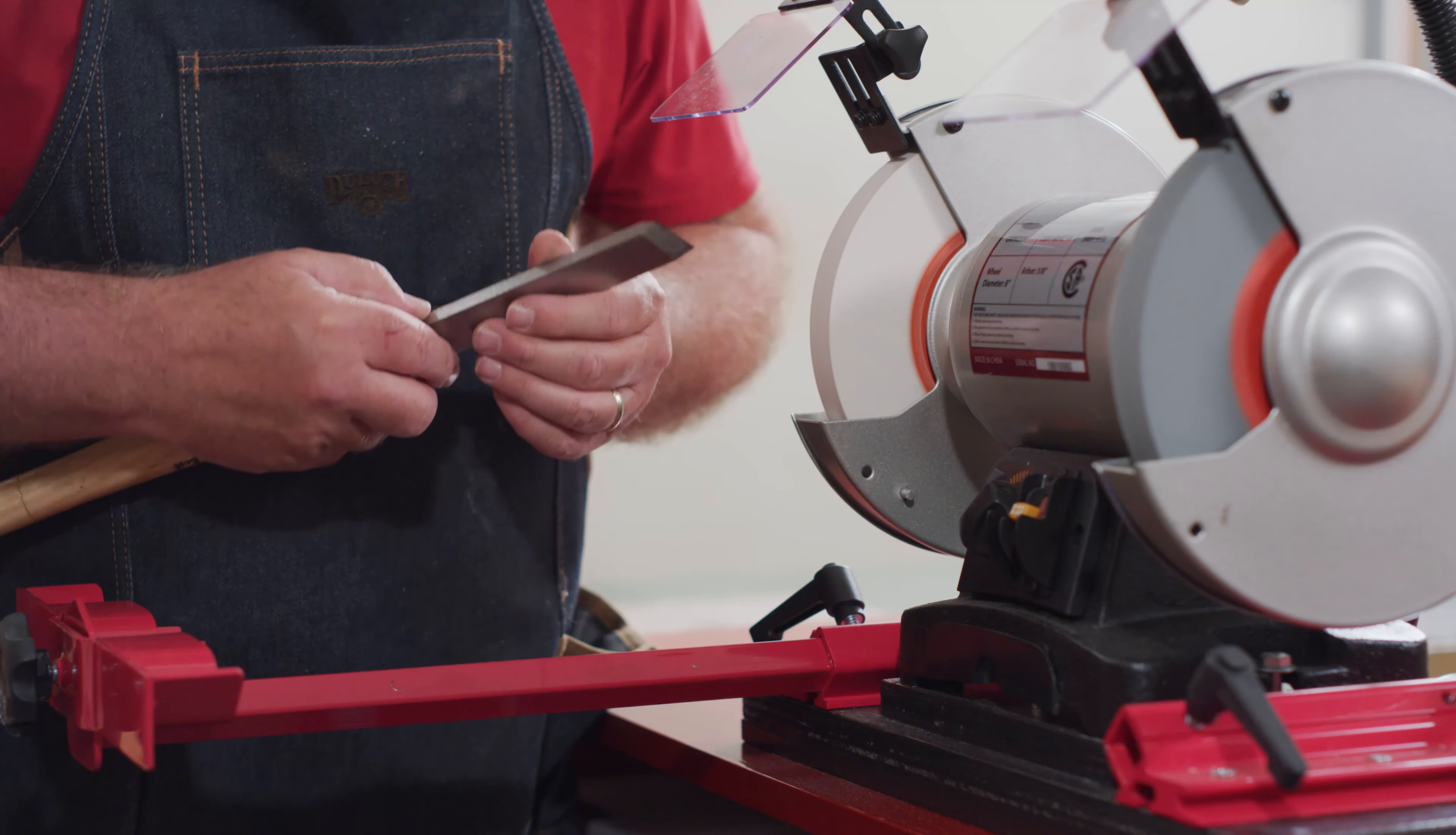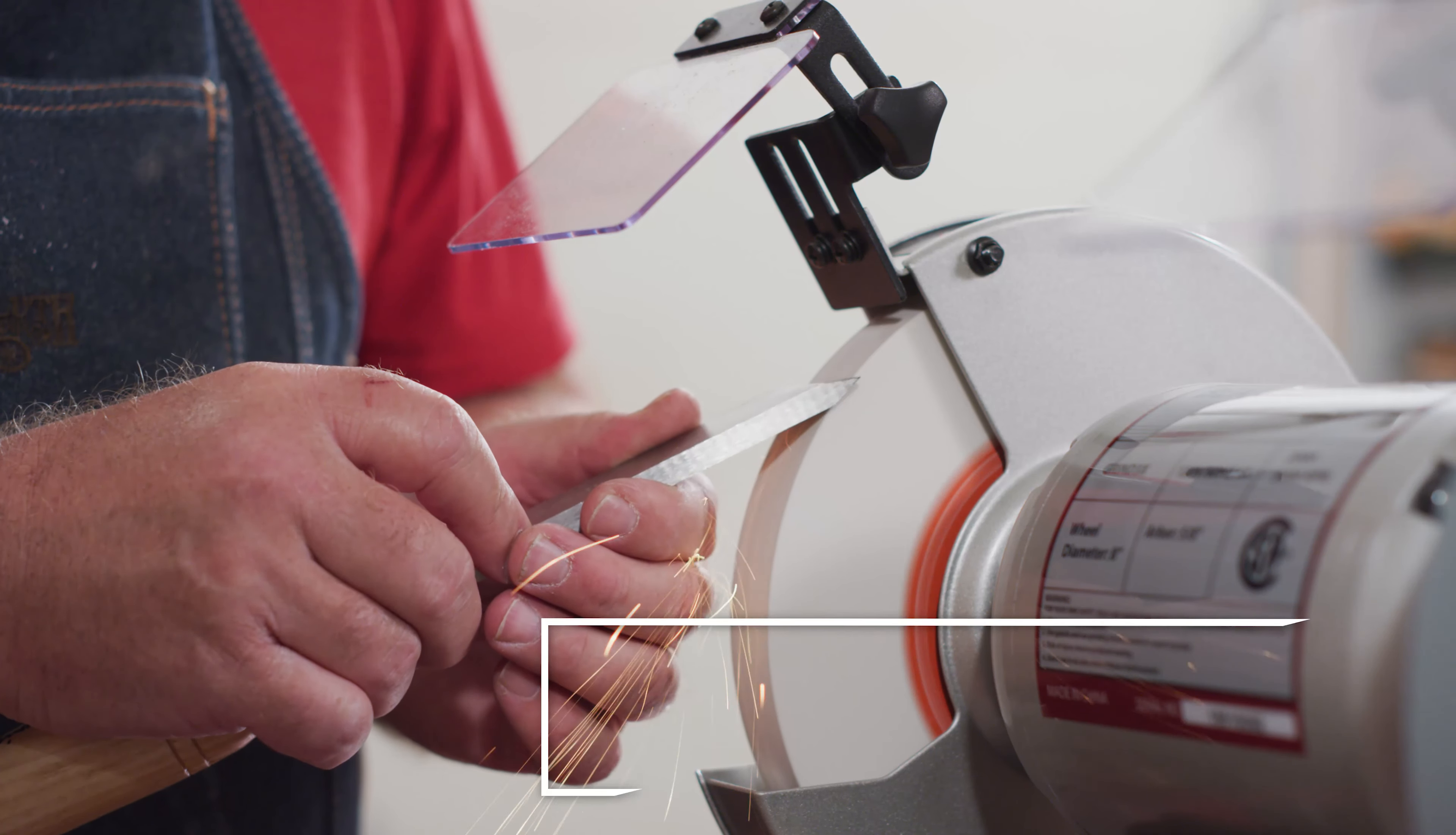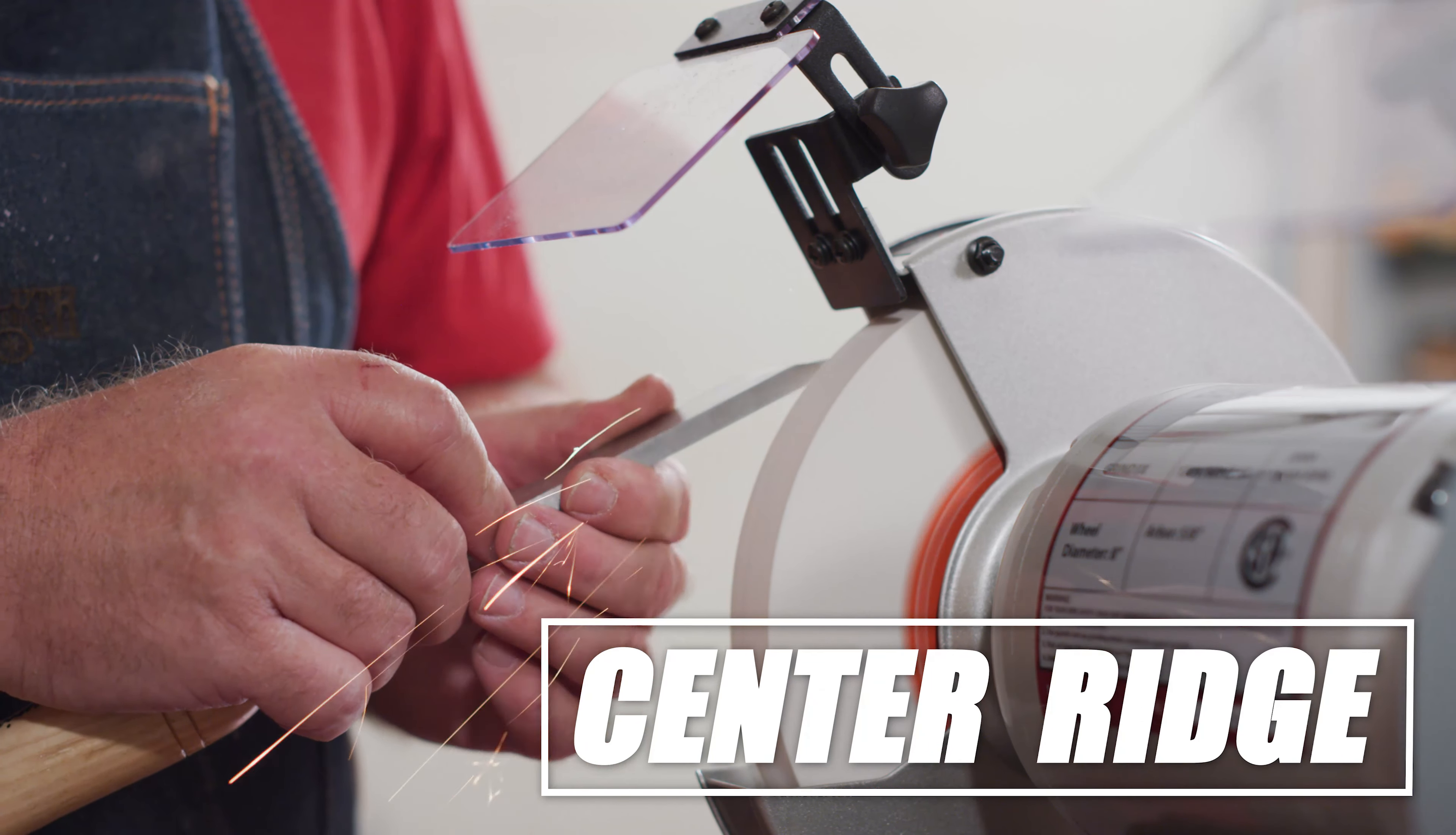Inspect the two sharpened surfaces. The ridge between the bevels should be centered. If the ridge is off center, lightly sharpen the shorter beveled edge to center the ridge.